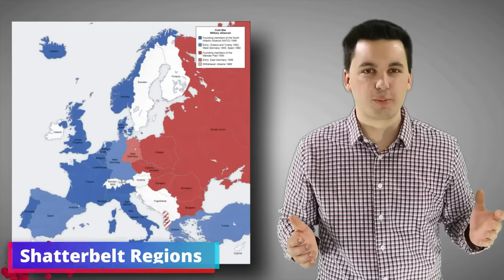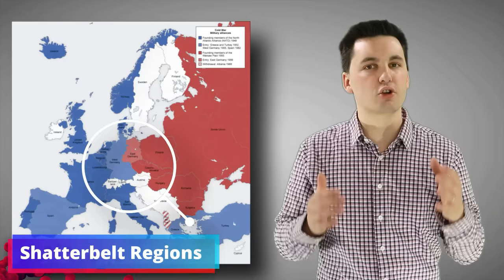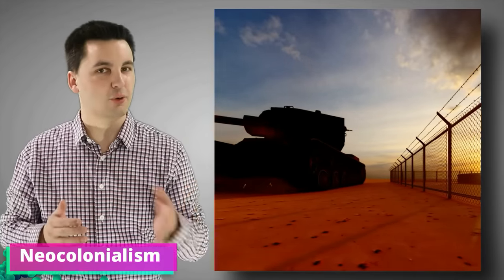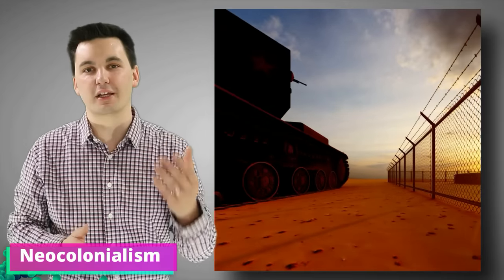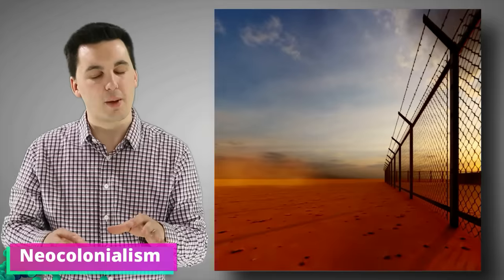Nations have self-determination — the right to govern themselves without external influence — to protect their cultural identity. Colonialism and imperialism created political boundaries through military conquest and territoriality. Shatter belt regions are caught between two external fighting powers. Today we can also look at neo-colonialism — the new form of controlling a country without actually occupying it — where a country uses economic or political influence to control another country without sending troops in.